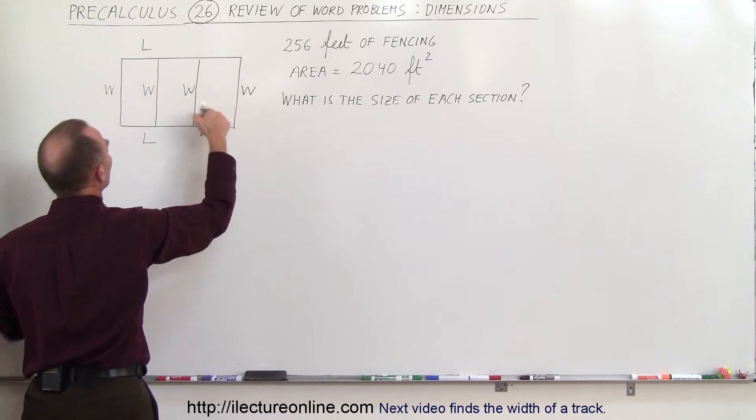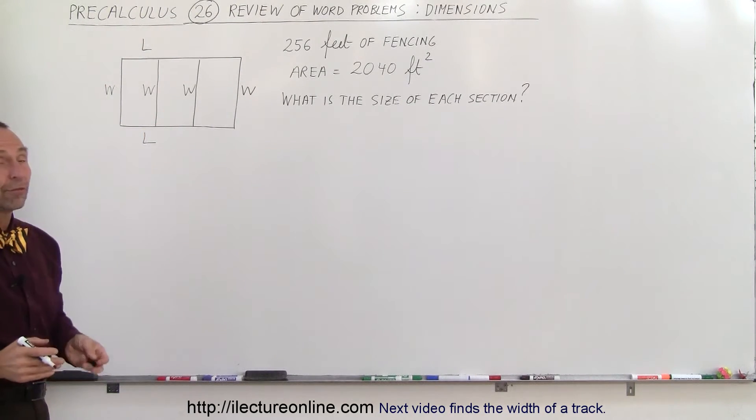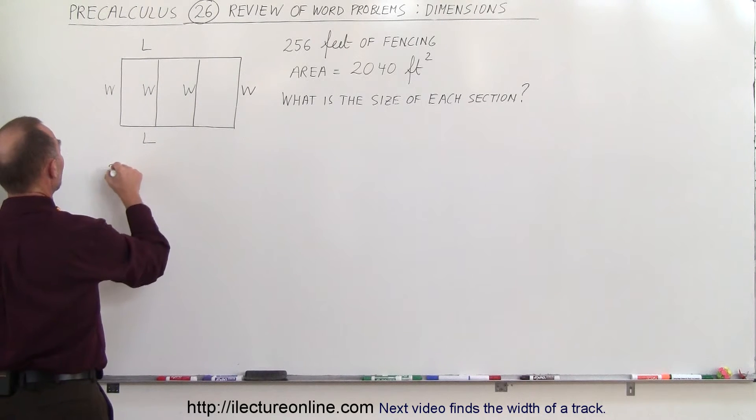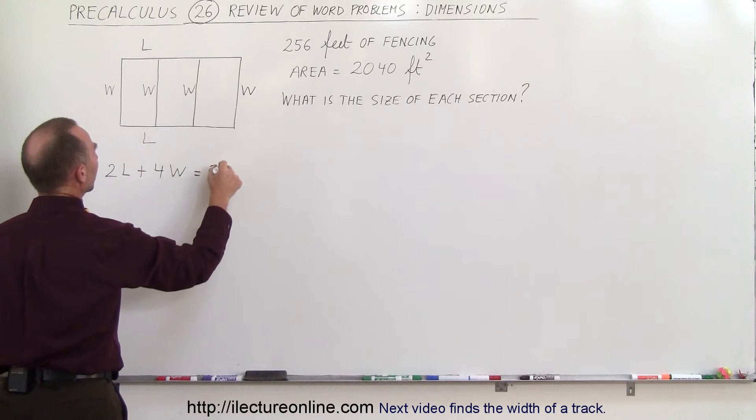widths. One, two, three, four and two lengths and when we add all that up together it should add up to 256 which means two times the length plus four times the width equals 256.